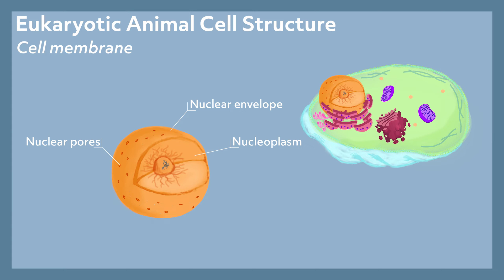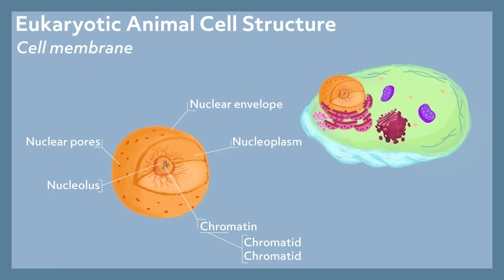Within the nucleus is a semi-solid fluid called nucleoplasm. Suspended in the nucleoplasm are the nucleolus and chromatin. The nucleolus takes up about a quarter of the nucleus's volume and is made up of proteins and ribonucleic acid, or RNA. Chromatin is a long strand of DNA made up of numerous genes. Chromatin forms chromatids, and two chromatids form a single chromosome. All of a cell's chromosomes are located within the nucleus. Also dispersed throughout the nucleolus are ribosomes, which are made in the nucleolus and transported out through the nuclear pores into the cytoplasm.